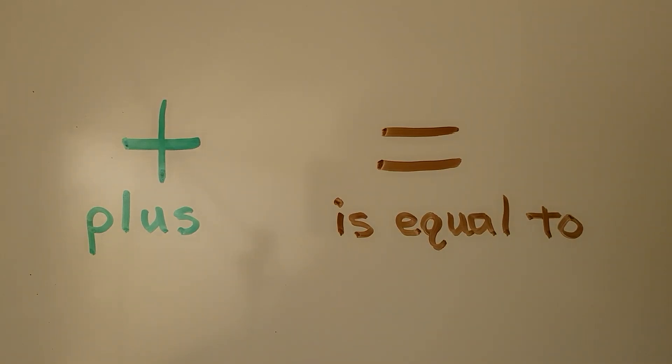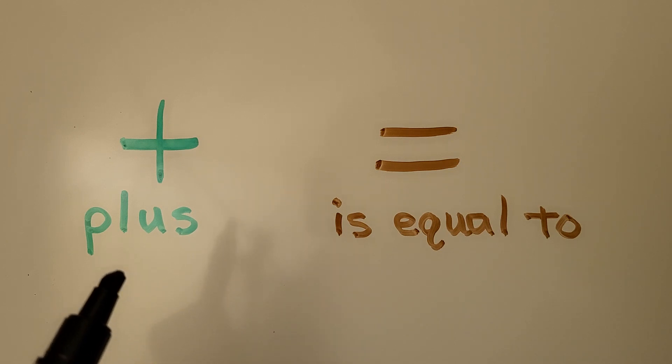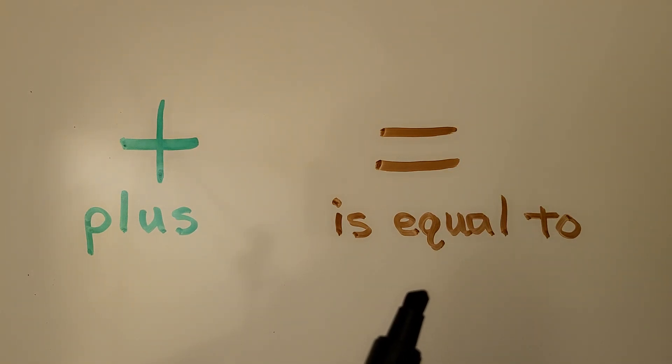In the last lesson, 5.3, we learned that a plus symbol tells us to add by putting the numbers together. We also learned that an equals symbol means is the same as. We can use these to write addition sentences.